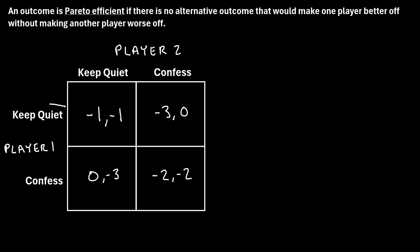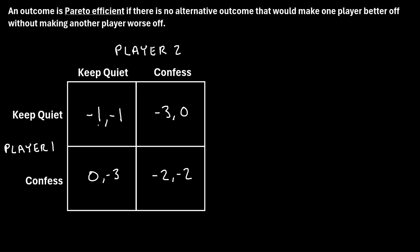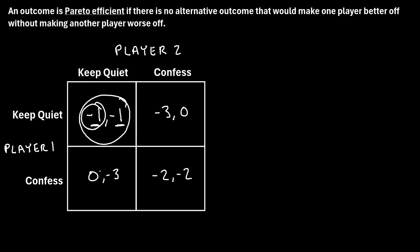Let's start with the first outcome: player one keeps quiet and player two keeps quiet. In this case, player one gets a payoff of negative one and player two also gets a payoff of negative one. To determine if this is Pareto efficient, we ask: is there another outcome we could move to that would improve one player's outcome without making the other worse off? If we move to one alternative, player one improves from negative one to zero, but player two goes from negative one to negative three — so they'd be made worse off.